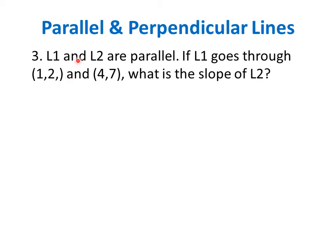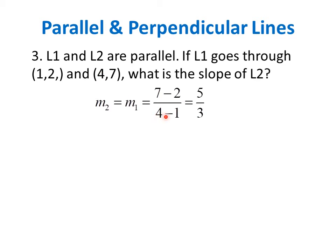Third example: line 1 and line 2 are parallel. If line 1 goes through the points (1, 2) and (4, 7), what is the slope of line 2? We know that parallel lines have equal slopes, so first we have to find the slope of line 1. Since we are given two points, we can use the slope formula: (y2 - y1) / (x2 - x1). So that is (7 - 2) / (4 - 1), which simplifies to 5/3. Therefore, the slope of line 2 is also 5/3.